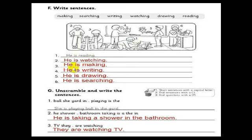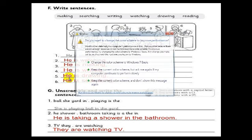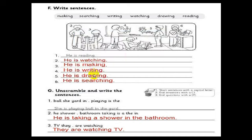Number three: he's making. By the way, you can say 'he's making the chair' or 'he's making something' — it's okay. Number four: he's writing. Number five: he's drawing. Number six: he's searching — he's looking for his things or something like that. We're going to say: he's searching.